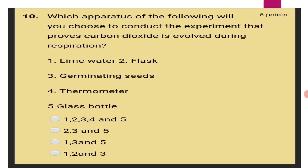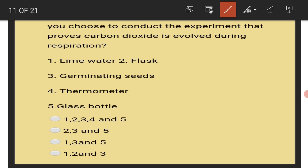Which apparatus of the following will you choose to conduct the experiment that proves carbon dioxide is evolved during respiration? That is 1-3-5. Lime water, germinating seeds and glass bottle will be chosen.